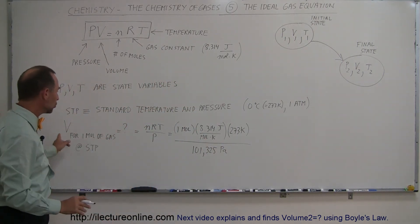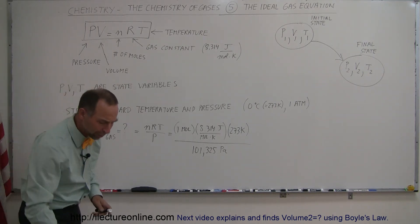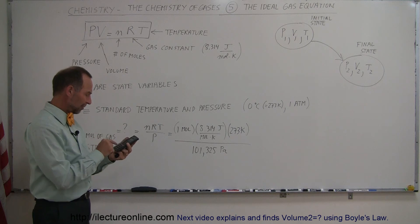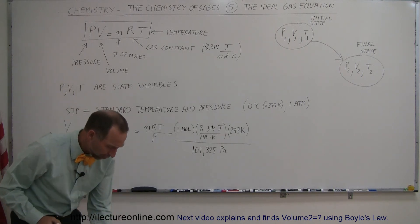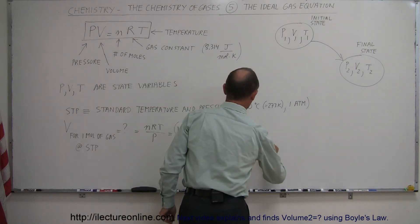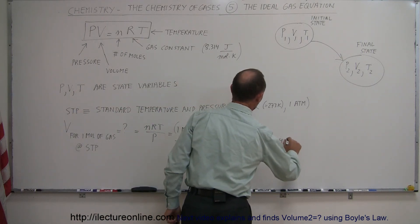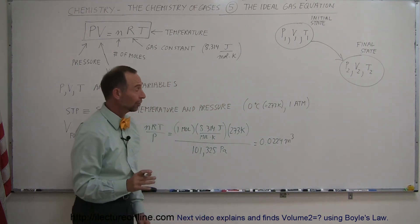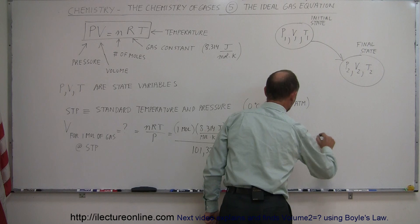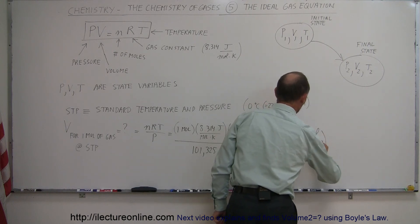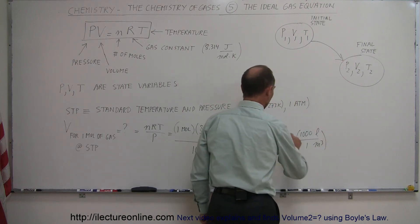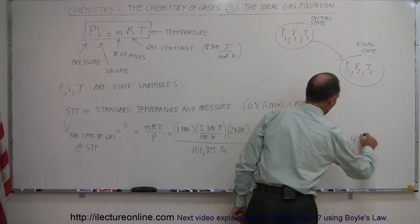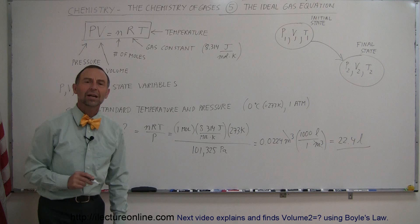When you cancel out all the units, you end up with cubic meters. So, we have 8.314 times 273 divided by 101,325 equals 0.0224 cubic meters. If we convert that to liters, one cubic meter is a thousand liters, so the cubic meters cancel out, and this becomes 22.4 liters. That's where that comes from.